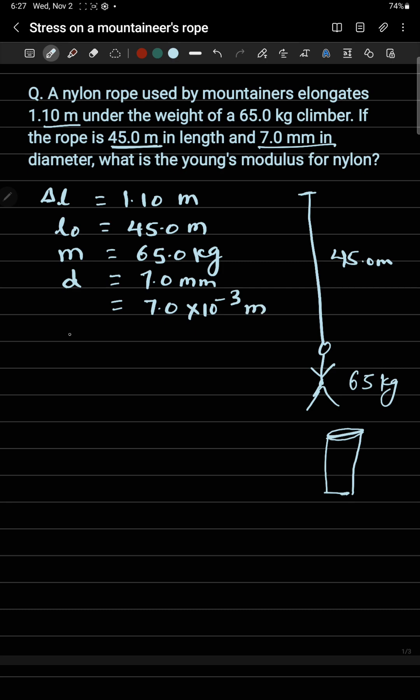I need the radius, so I can divide this diameter by 2 to get radius, which will be 3.5 times 10 to the power minus 3 meters. This is the radius of this rope.